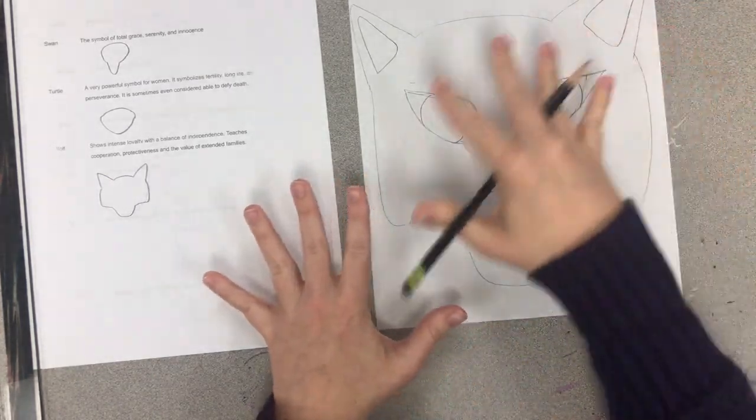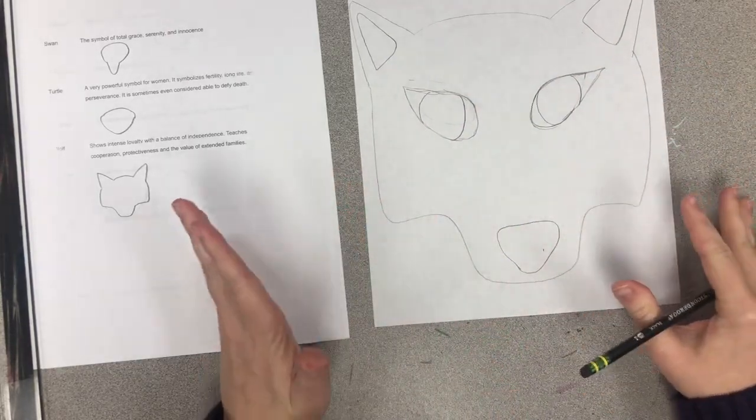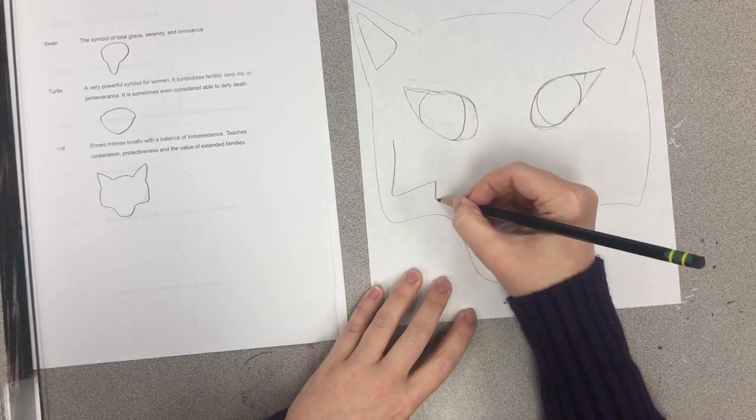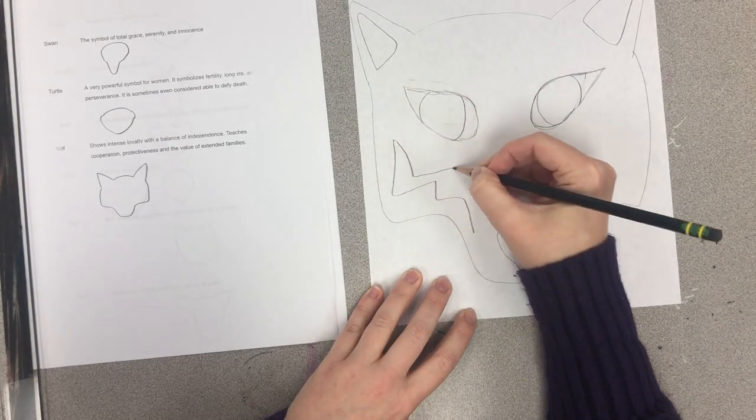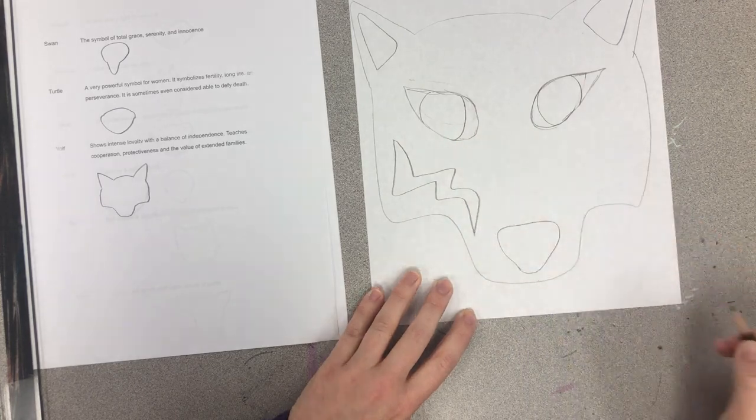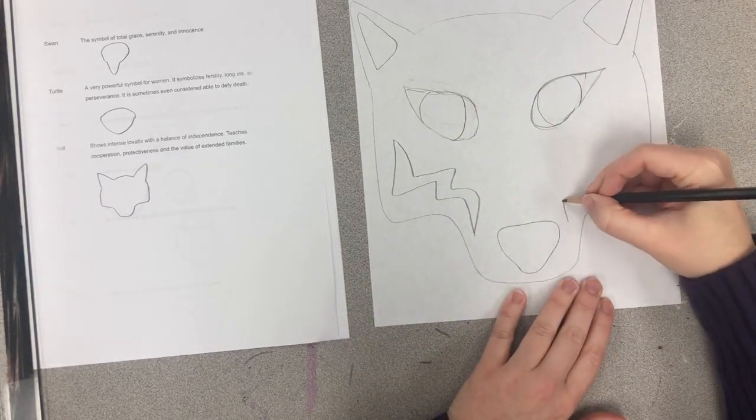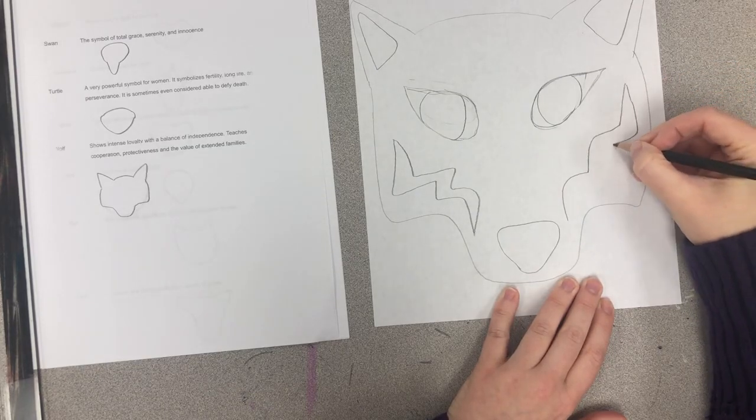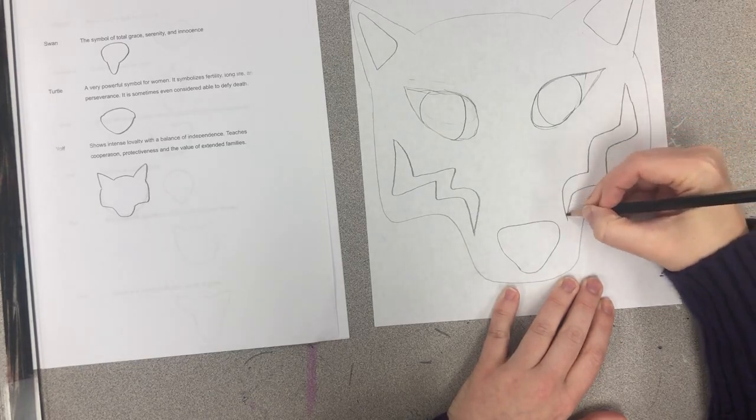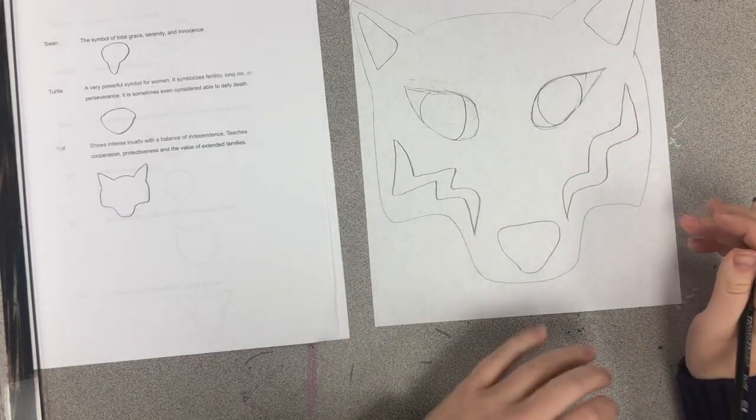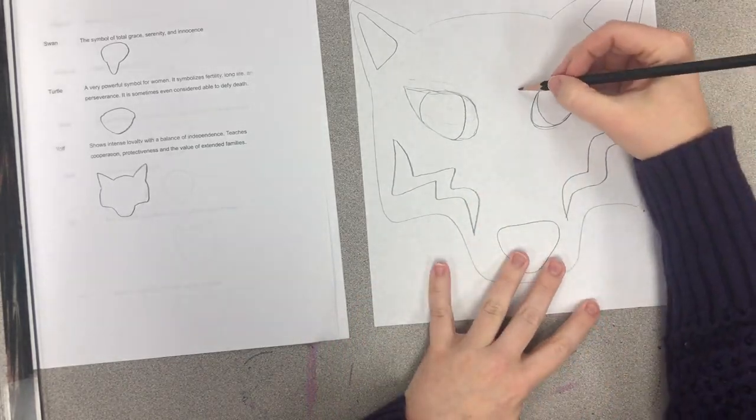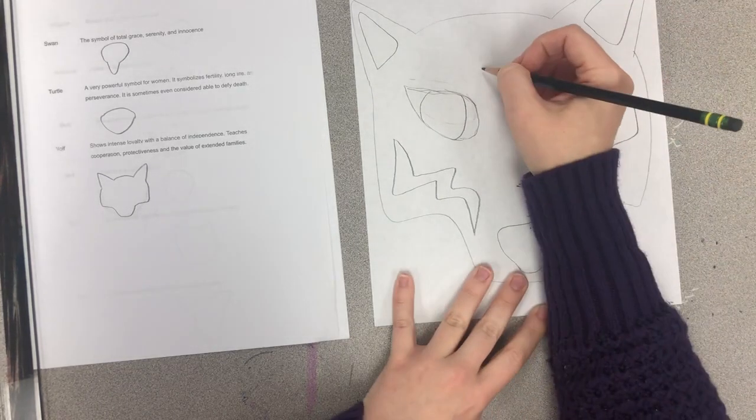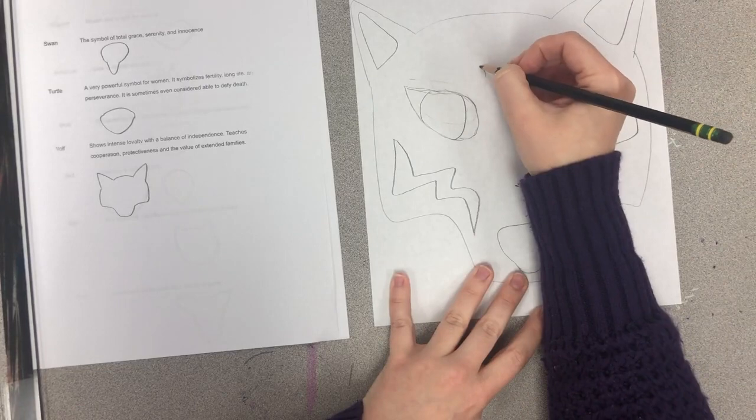Okay, once I've got the general shape of the face then I can add some extra details. For example, maybe to represent his fur I'll do kind of a wiggly line like that. Remember, Native American totem poles use really simple designs, so what I'm trying to do here is just kind of mimic some of the shapes that I see in the wolf's fur.